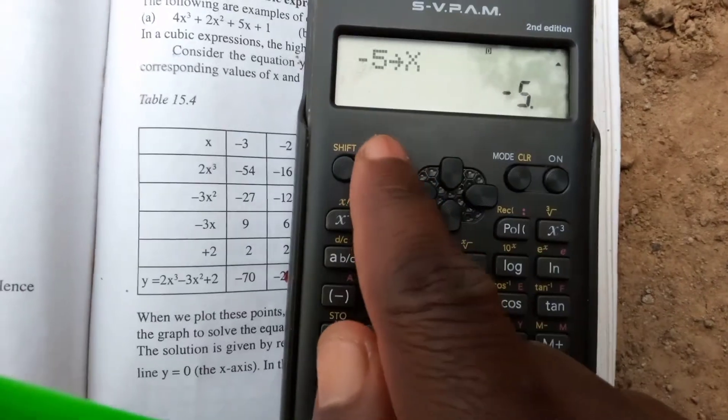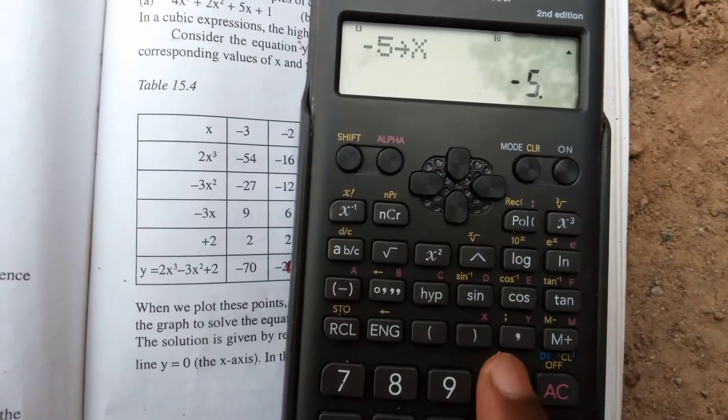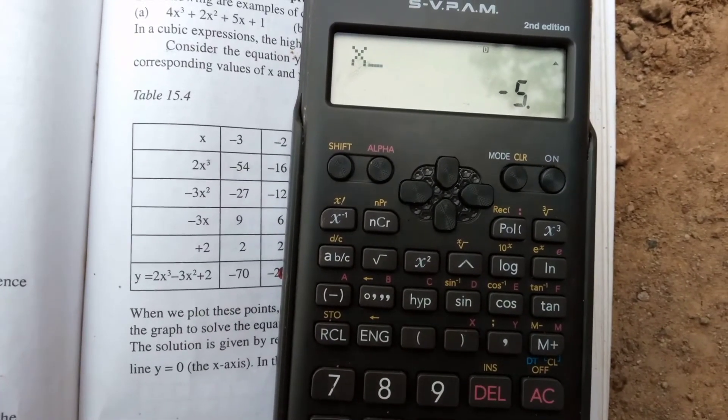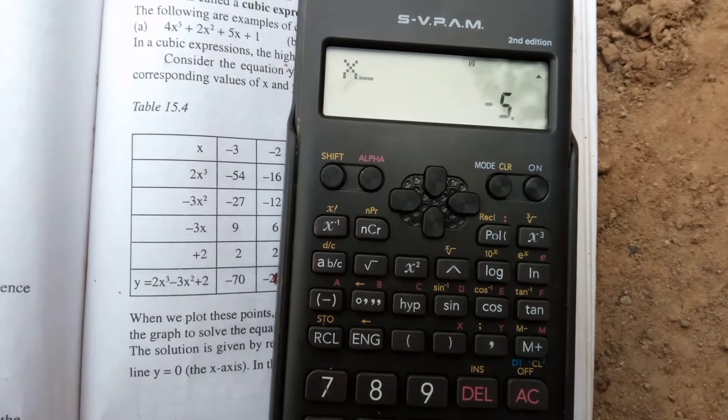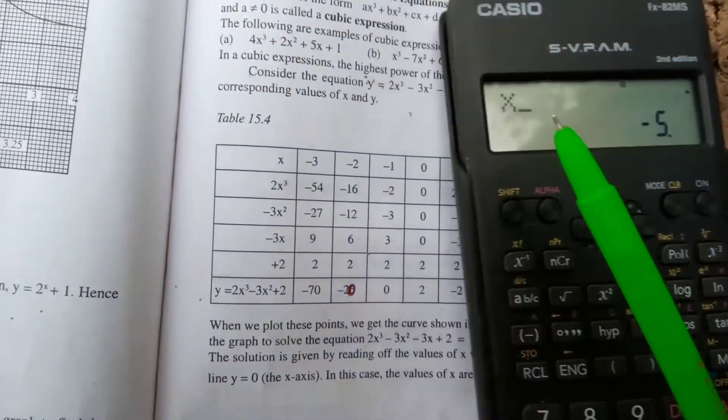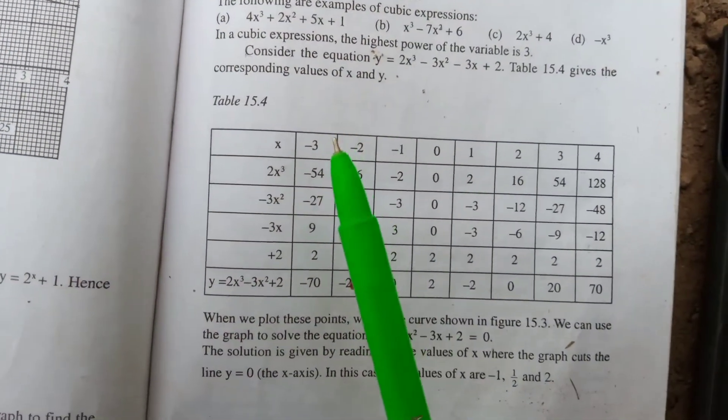Secondly, you press alpha, then close the bracket. Then observe your values. They are moving from negative 3 to negative 2.